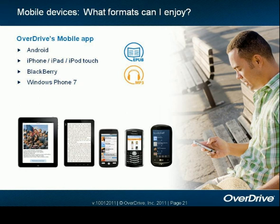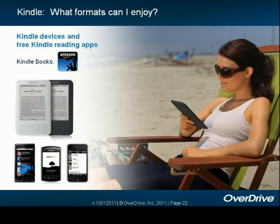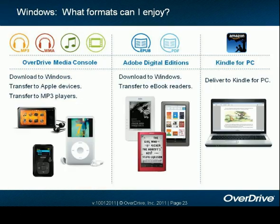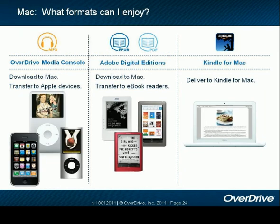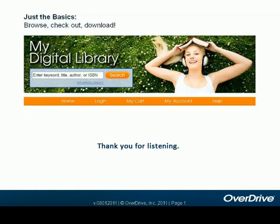Users might be curious what formats they can enjoy from mobile devices. From Android, iPhone, iPad, iPod Touch, Blackberry, and Windows Phone 7, users can enjoy EPUB e-books and MP3 audiobooks. Kindle users can enjoy books from Kindle device reading apps and deliver to their Kindle or mobile devices using the Kindle app. From Windows with OverDrive Media Console, users can enjoy MP3, WMA, music, and video; with Adobe Digital Editions, EPUB and PDF; and with Kindle for PC. From Mac, OverDrive Media Console supports MP3 audiobooks; Adobe Digital Editions supports EPUB and PDF; and Kindle books are available through Kindle for Mac. Thank you so much for listening — I hope you found it informative.